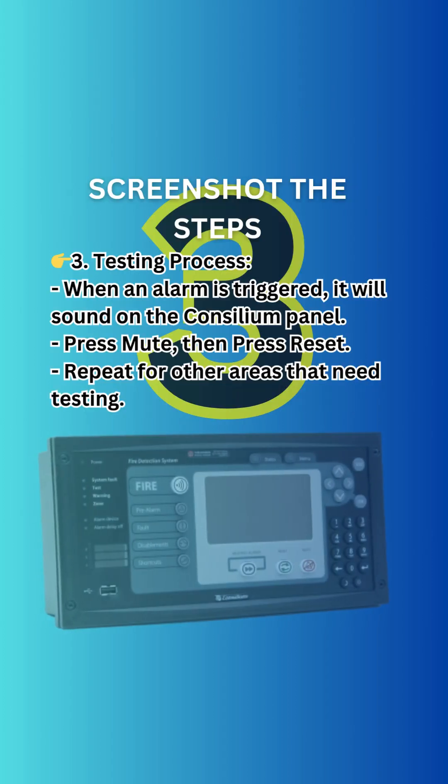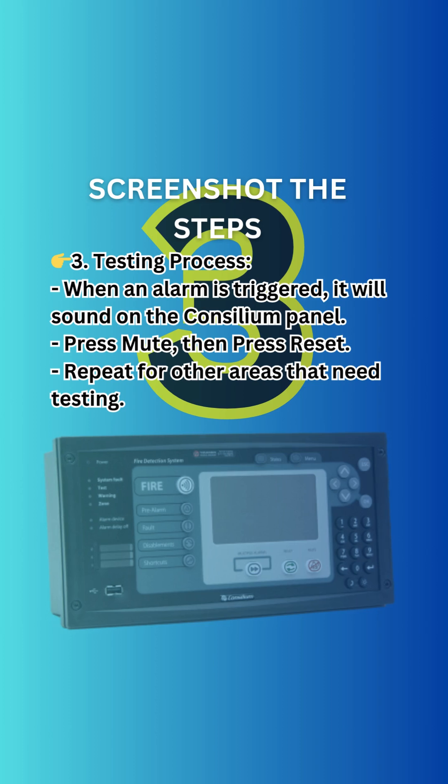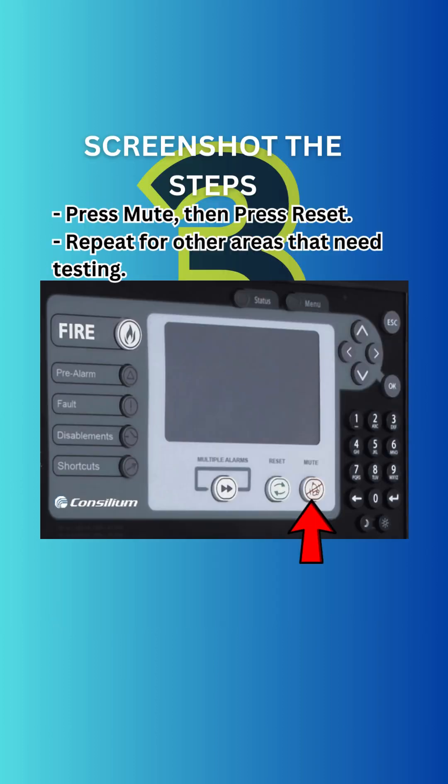Testing process: when an alarm is triggered, it will sound on the Concilium panel. Press mute, then press reset. Repeat for other areas that need testing.